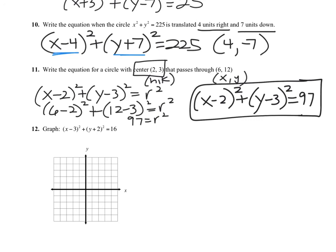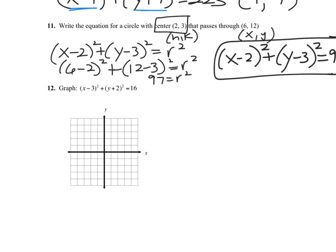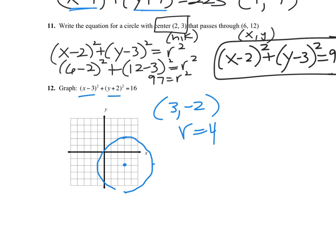Finally, number 12: graph the circle. Start by graphing the center at 3, negative 2 — remember opposite signs. Then from the center count a distance of 4 in each direction: up, down, left, and right. Plot those four points and draw the best circle you can. Go a little off the grid if needed — eyeball it and connect the points.